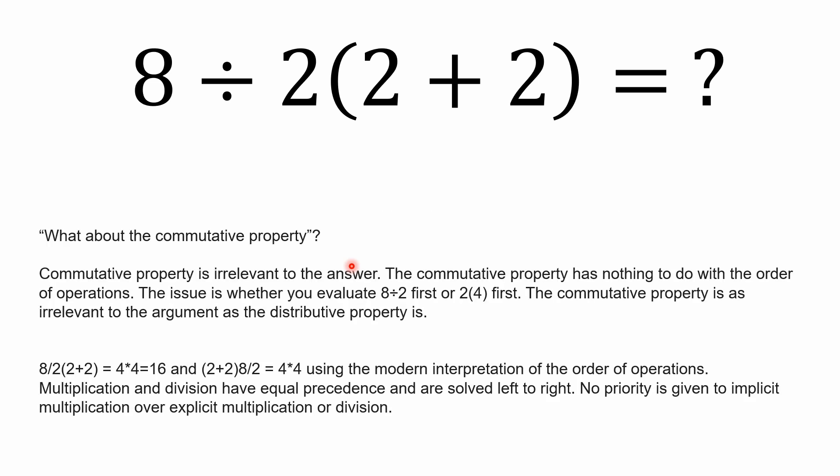And then what about the commutative property? Some people will bring this up too. They'll do some fancy math and say, well, again, the commutative property is irrelevant to this answer as well. The commutative property has nothing to do with the order of operations. It's still, once again, that the only argument here is whether you evaluate 8 divided by 2 first or whether you evaluate 2 times 4 first. The commutative property is just as irrelevant to this argument as what the distributive property was.